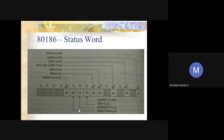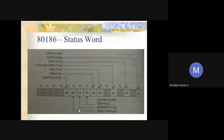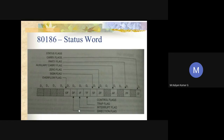The overflow flag is set whenever a signed result is too large and cannot be expressed within the number of bits in the destination operand; otherwise it is cleared. These six flags are status flags. The remaining three are control flags: trap flag, interrupt flag, and direction flag. The trap flag is used in single-step mode — when set, a single-step interrupt occurs after each instruction executes.